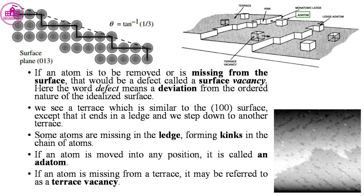If an atom is missing from the surface, that would be a defect called a surface vacancy — a deviation from the ordered nature of the idealized surface. We see a terrace which is similar to the surface, except that it ends in a ledge and we step down to another terrace.